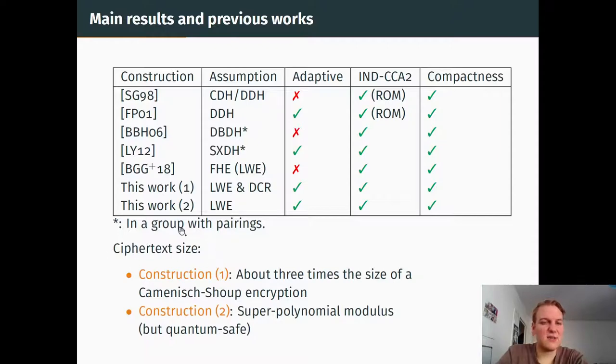To give you more insight on our constructions, the ciphertext size of the first construction is about three times the size of a Camenisch-Shoup encryption, which is a verifiable encryption, not threshold at all, so that's pretty good. But the second construction needs a super-polynomial modulus to have its security, which is less interesting, but it's still worth mentioning because the learning with errors assumption is quantum safe.